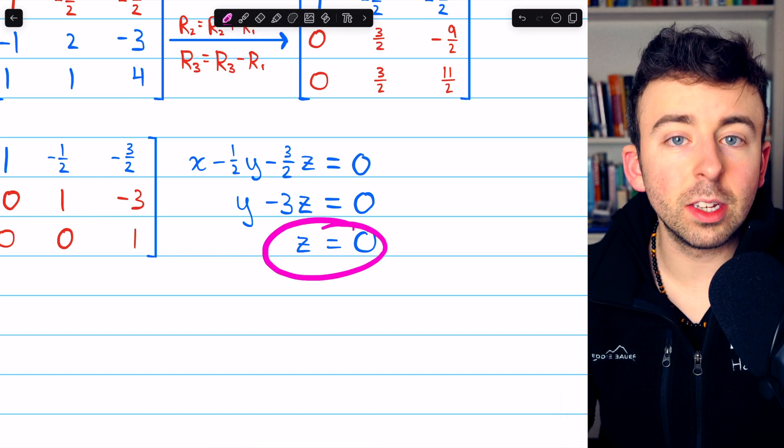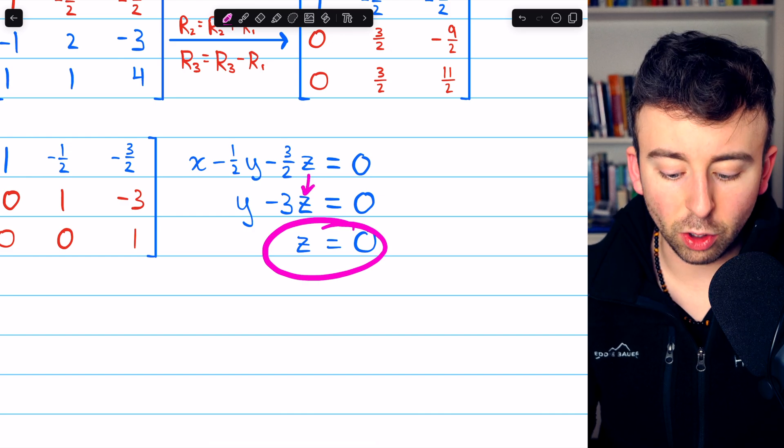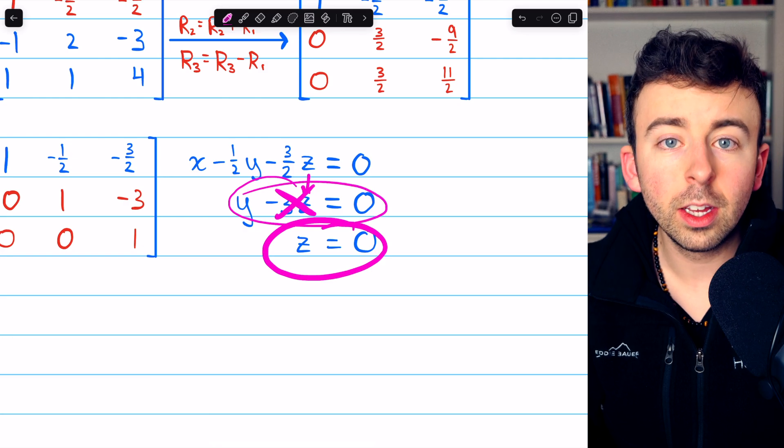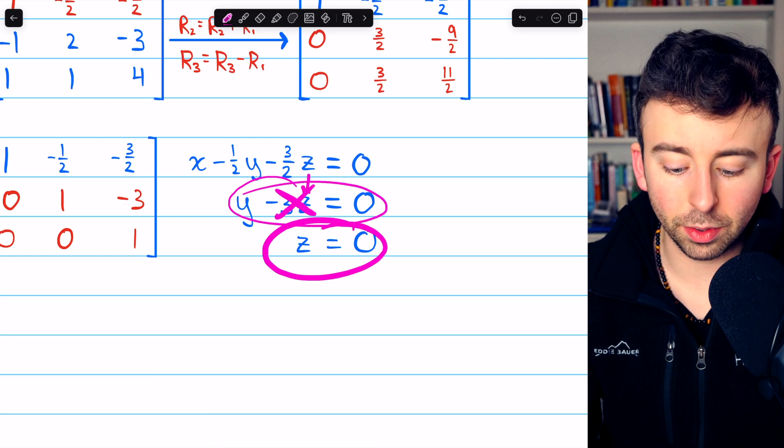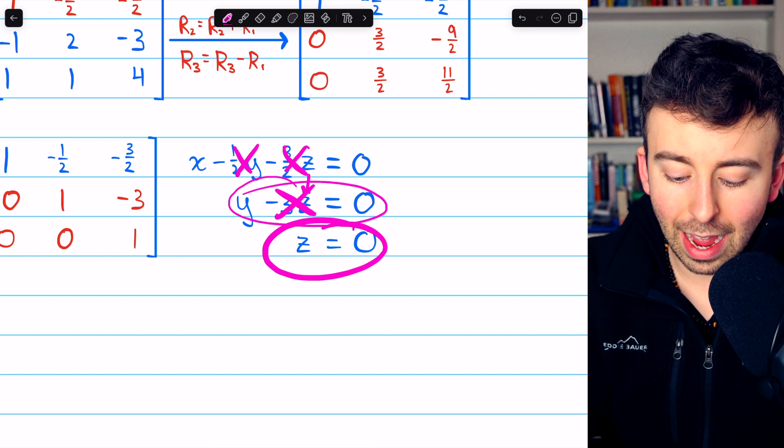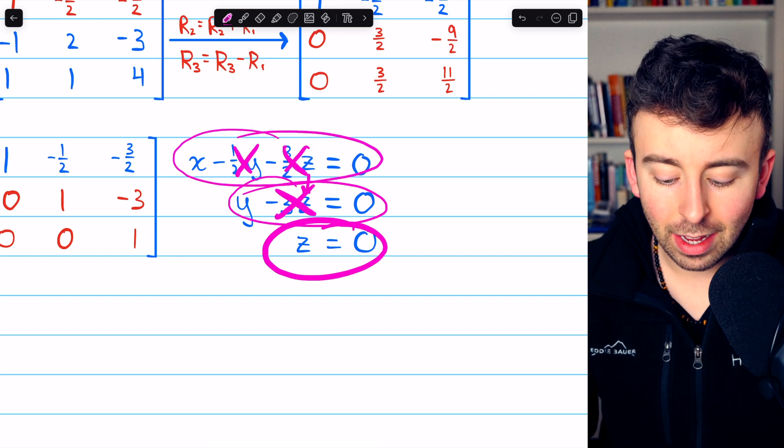Then using a process sometimes called back substitution, we can solve this system. We know that z must equal zero. So plugging that into the second equation, we would just get that y equals zero. Plugging z and y equals zero into the first equation, those terms would cancel out and we would have x equals zero.